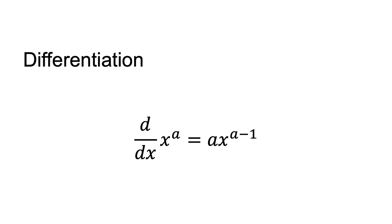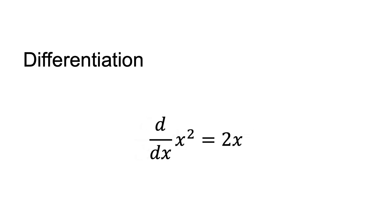The derivative of an exponentiation is d/dx x to the power of a equals a times x to the power of a minus 1. For example, d/dx x squared equals 2x.